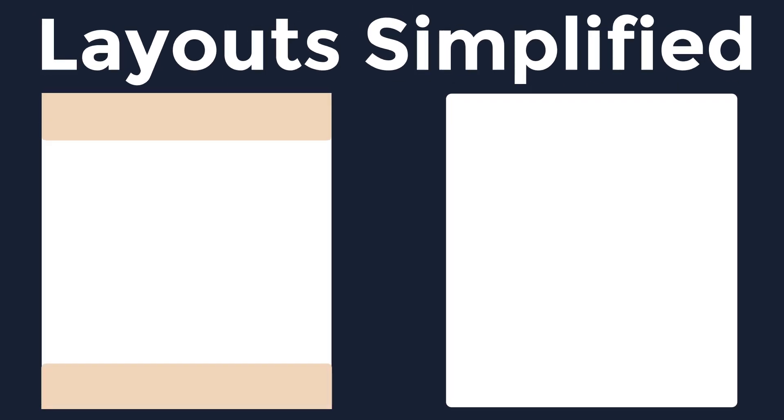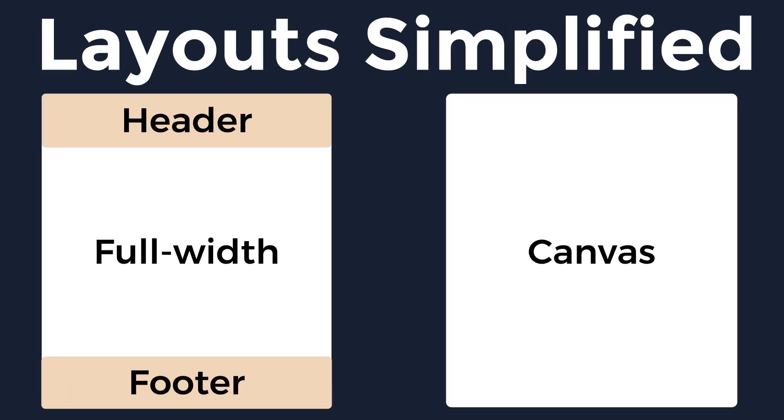To put it simply, the Canvas Layout is a completely blank layout, whereas the Full Width Layout has a header and footer.